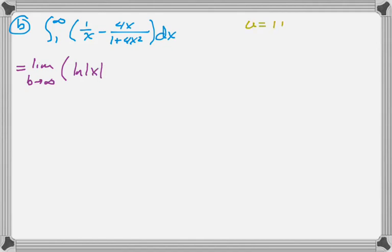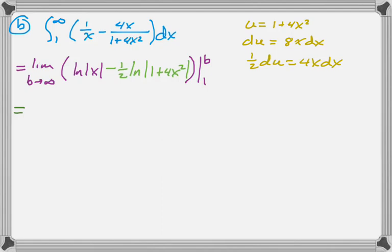Now the second part of this, I'm going to do a u substitution over here quickly. u is 1 plus 4x squared, so du is 8x dx, which means 1 half du is 4x dx. So that converts the original integral into 1 half the integral of du over u. So I end up with here minus 1 half the natural log of whatever u was, which was 1 plus 4x squared. And then we're going to evaluate that from 1 to b.